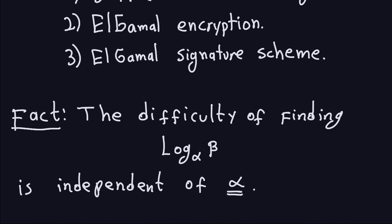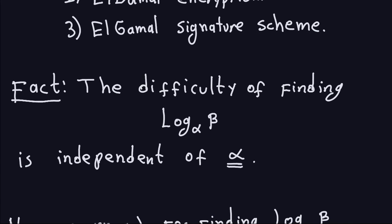One important fact to emphasize: you might think that if you choose alpha to be a small generator, maybe the problem is easier. Actually, it is not. The difficulty of finding this log does not depend on the generator. Even if you choose something small for alpha, the hardness doesn't depend on the magnitude of alpha. Basically, if you have a fast algorithm to find logarithms in one basis, you already have one for other bases. So the difficulty of this problem does not depend on the choice of generator — it depends on the prime.